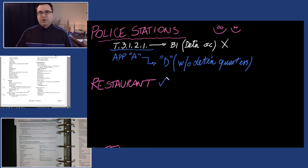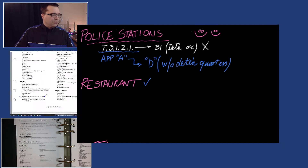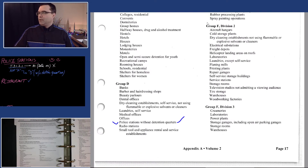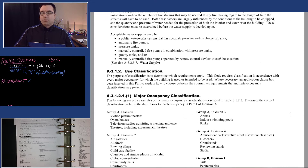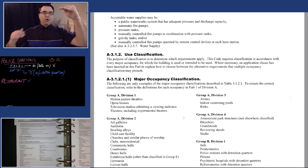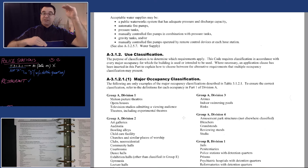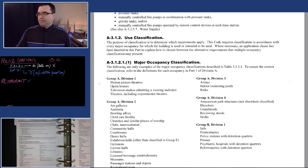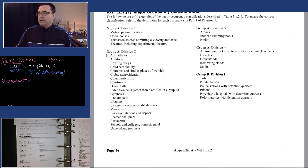We're going to look at it on screen instead — this way it might be easier to view. We're going to start from the very beginning and look for 'restaurant' under all occupancies. You start from A1 and go all the way to F3 — you don't stop until you reach the end. Let's start with A1: anything for restaurants there? Nope. How about A2?